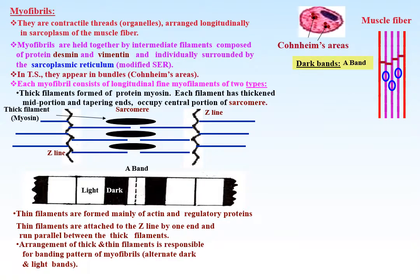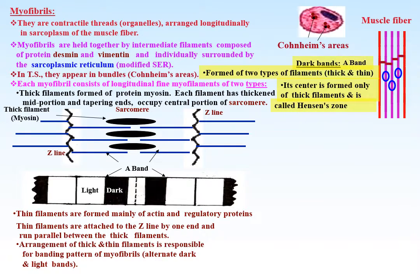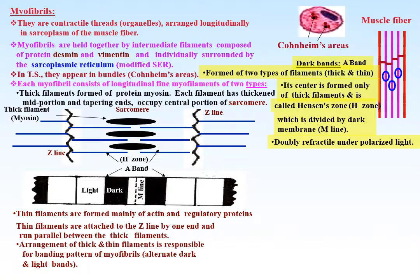The alternating dark and light bands: the dark band (A band) is formed of two types of filaments — thick and thin — except in the center, which is formed only of thick filaments. The center appears pale and is called Hensen's zone or H zone, which is further divided by the dark M line formed by cross-connections at the mid-points of the thick filaments. The dark band is doubly refractile under polarized light, rich in calcium and deeply stained.